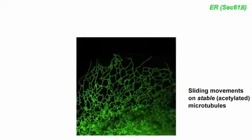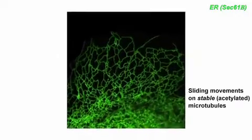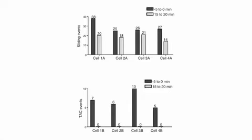Volz wondered whether acetylation might provide a platform for ER sliding. Her collaborator Kristen Verhey at Michigan published work showing that kinesin-1 prefers acetylated microtubules. Volz thought this was interesting because kinesin-1 is a motor for the ER — could there be a connection between these modified microtubules and ER dynamics? So the first thing they did was make movies of the ER moving around and quantitate how fast it moves and how often it moves by each of the two mechanisms.